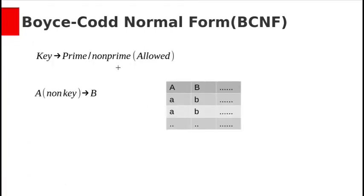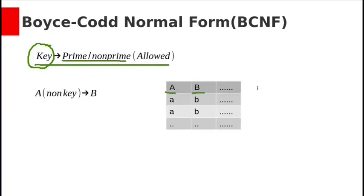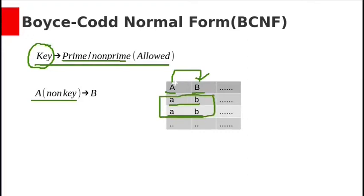From the BCNF definition, functional dependencies where a key derives prime or non-prime attributes are allowed. Let us see what happens if a non-key attribute derives other attributes. If attribute A is non-key, A can determine B, and since duplicates are allowed for non-key attributes, we have redundant data. If A is a key, this kind of redundancy will not occur. So BCNF enforces that all determinants must be keys.